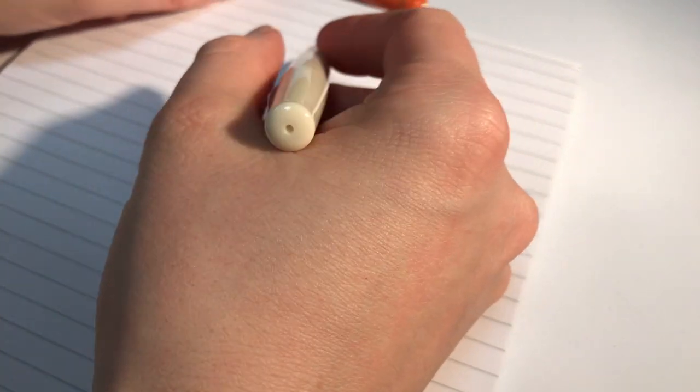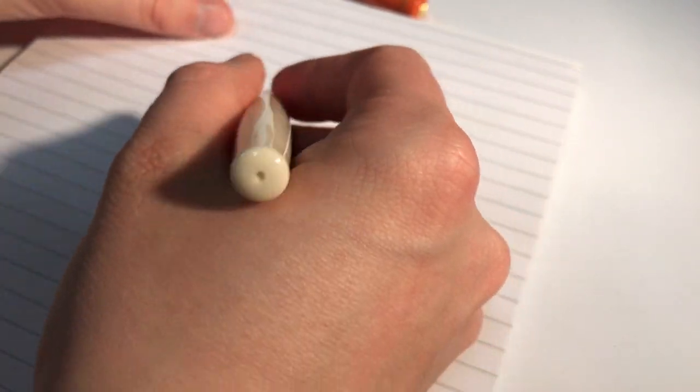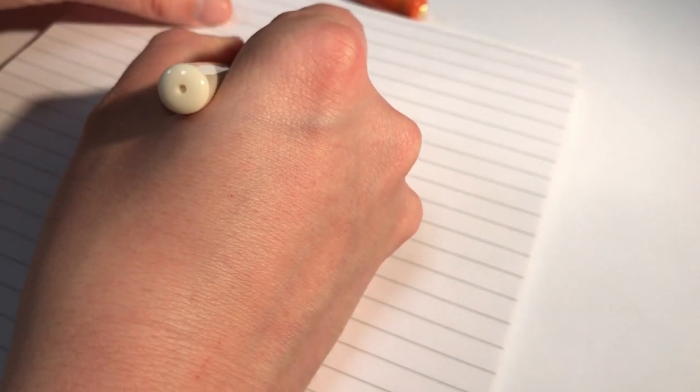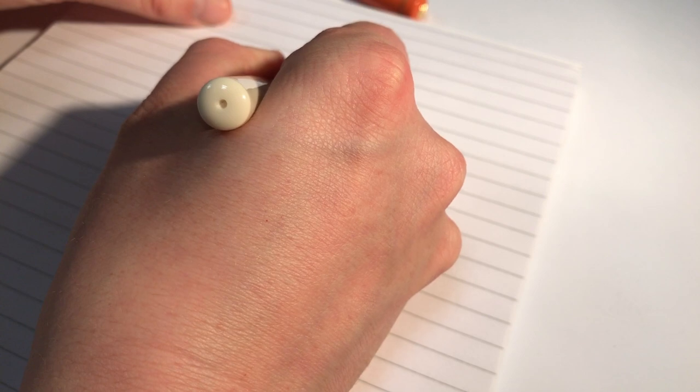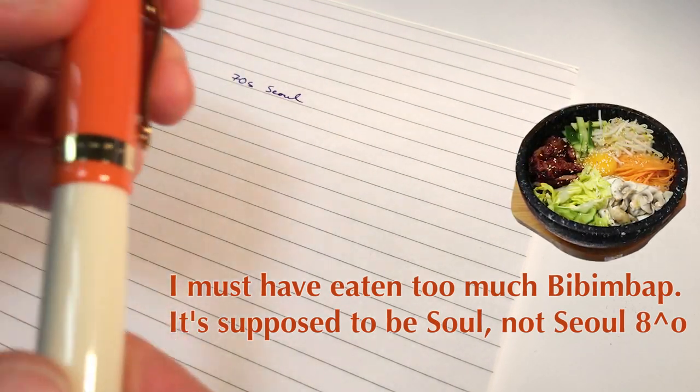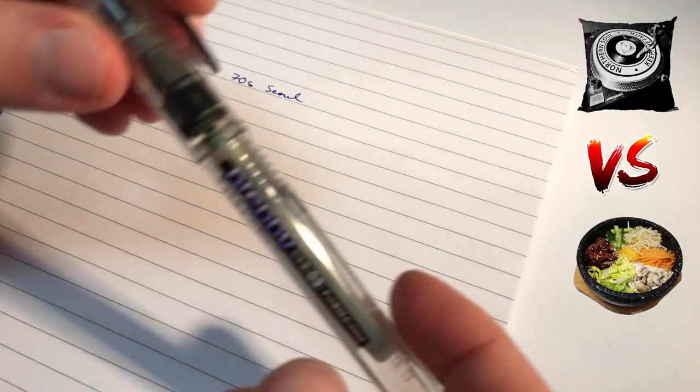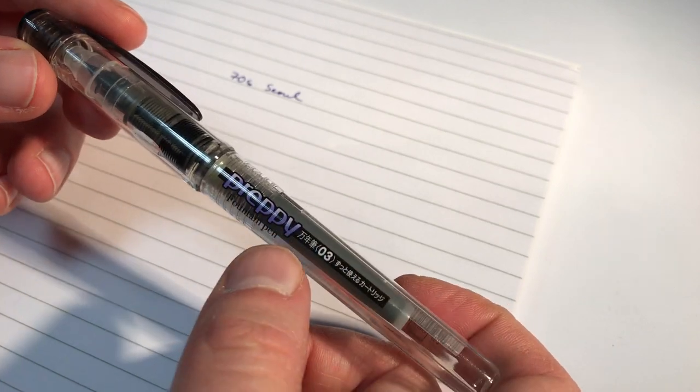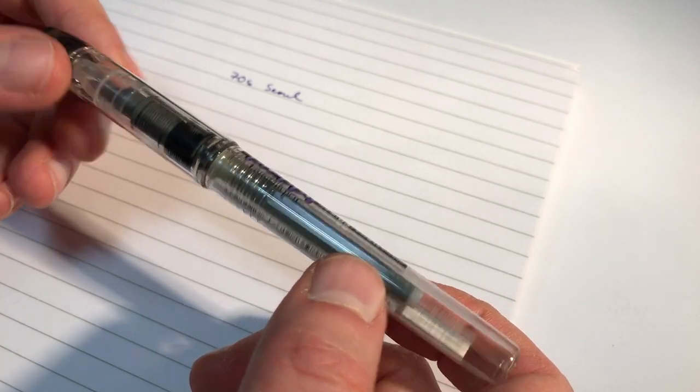Here's some French made Lyraeco paper, so this is the 70s Soul. Just to put it into perspective. Here's a Platinum Preppy, 0.3 mm, I guess that's what it's supposed to mean.